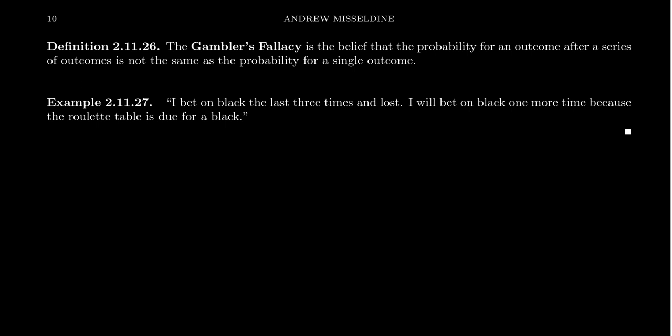Speaking of statistics, another fallacy we can refer to is the gambler's fallacy. The gambler's fallacy is the belief that the probability for an outcome after a series of outcomes is not the same as the probability of a single outcome. Take the following example here. Imagine you have someone who's like at Las Vegas betting on a roulette table or something. They might say something like the following. I bet on black the last three times and I lost. I'm going to bet on black one more time because the roulette table is due for a black.